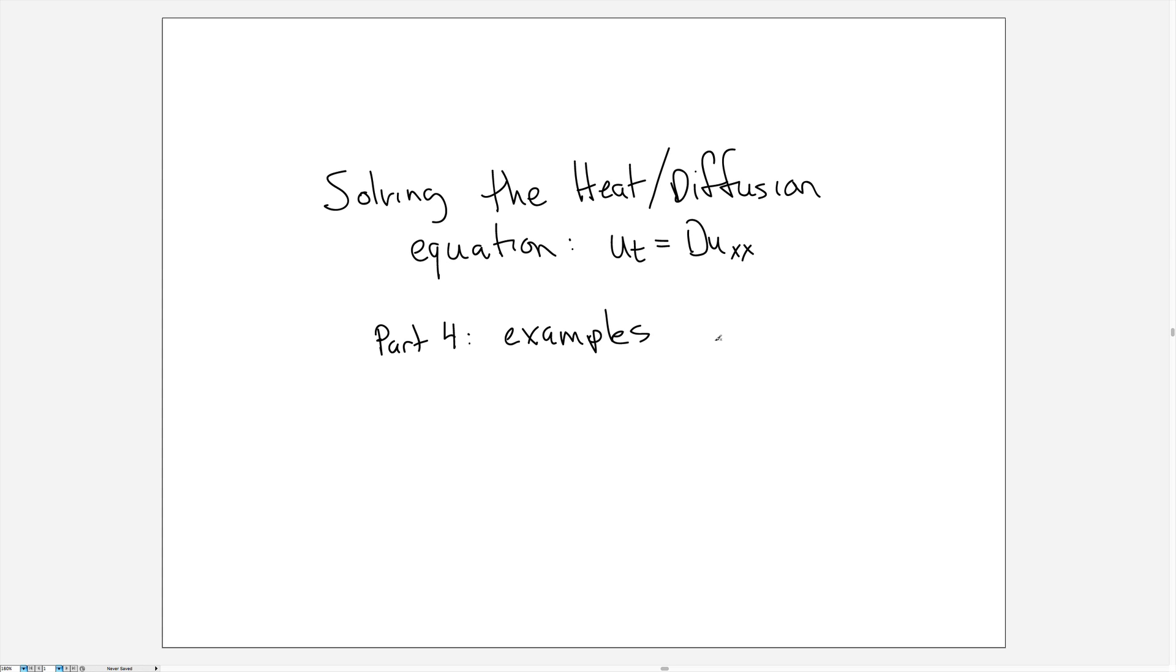Solving the heat or diffusion equation u_t = u_xx. This is part 4 of a series of videos on the heat and diffusion equation, and here I'm going to talk about two examples: a Dirichlet boundary condition case and a Neumann boundary condition case, both non-homogeneous.